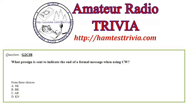Question 8: What prosign is sent to indicate the end of a formal message when using CW? SK is not the end of a formal message. BK means break or back to you — used in POTA for quick exchanges. KN means looking for a specific station. The correct answer is AR — dit-dah-dit-dah-dit — that is the prosign used at the end of a formal message. SK is when you're going off the air.